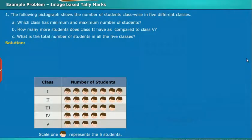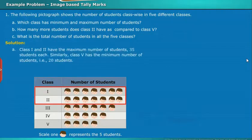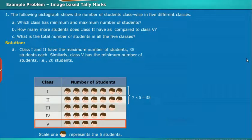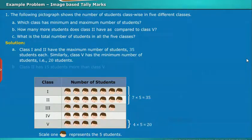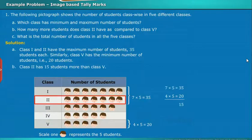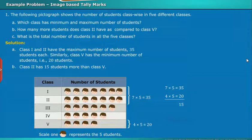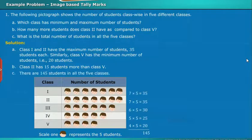The solution is as follows. Class 1 and 2 have the maximum number of students, 35 students each. Similarly, class 5 has the minimum number of students, that is 20 students. Class 2 has 15 students more than class 5. There are 145 students in all the 5 classes.